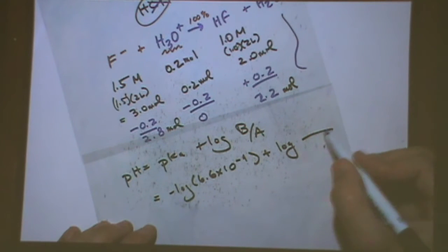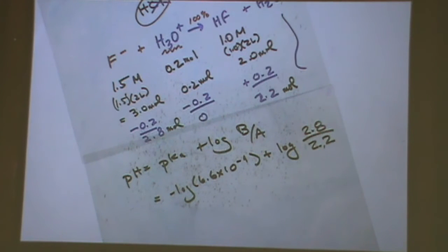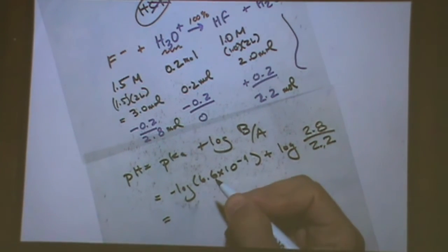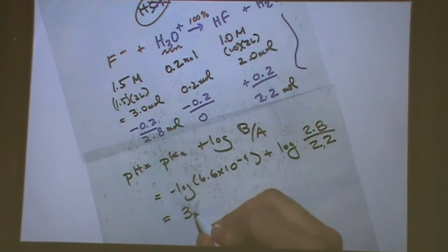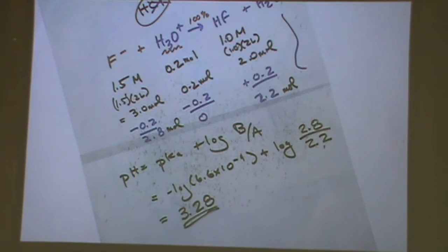pH equals pKa plus log base over acid. pKa is the negative log of Ka. Okay. The base is what number? What number goes into the numerator? 2.8 right here. F minus. And the acid is 2.2. Do I need to change that to molar? I don't because it's a ratio. So even if I divided by 2 liters, it would be the same ratio. Okay. This turned out to be 3.28. Is that the kind of answer I expected? Yeah. The previous answer was 3.36. This is slightly smaller because I added an acid. So it went down a little. Not a lot because it's a buffer.